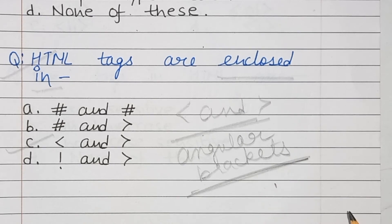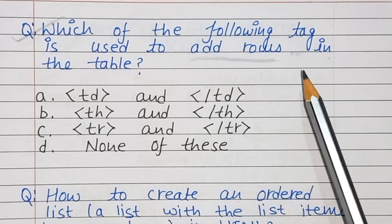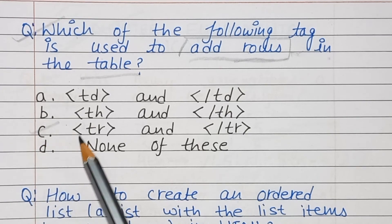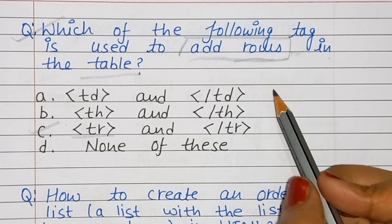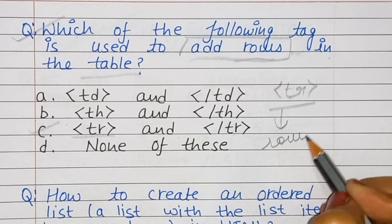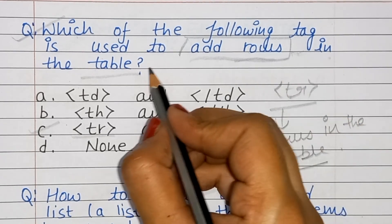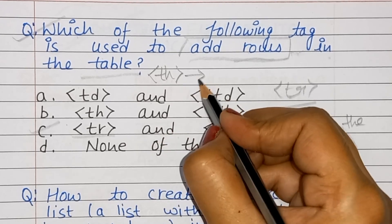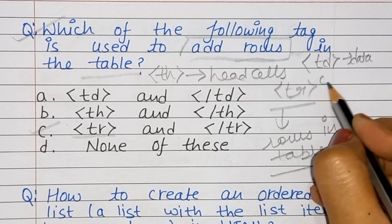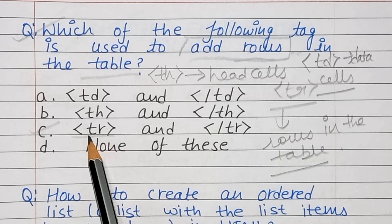Next question: Which tag is used to add rows in a table? The answer is the TR tag. The TR tag in HTML is used to define rows in a table. It can consist of one or more TH tags (head cells) and TD tags (data cells).